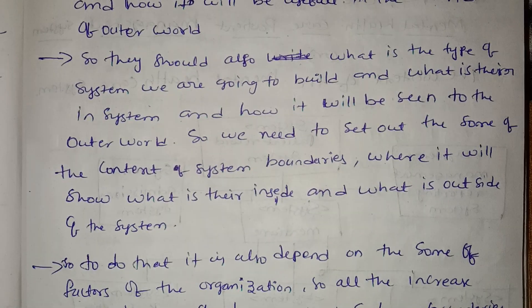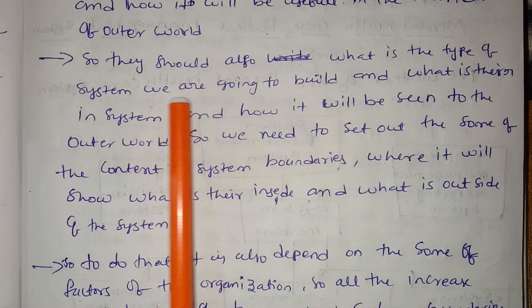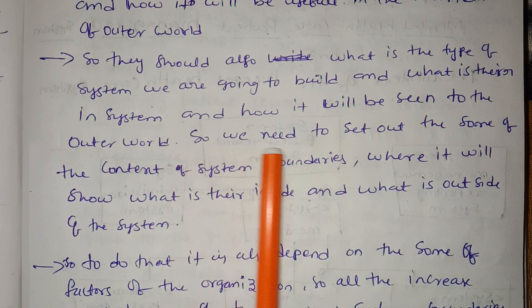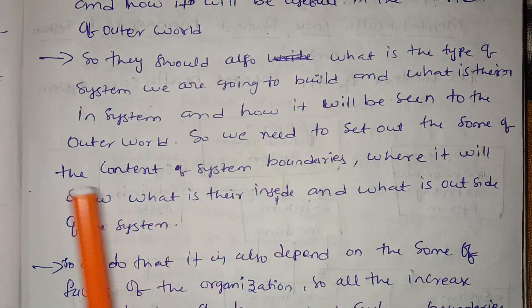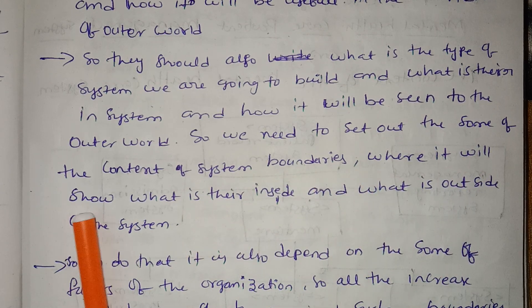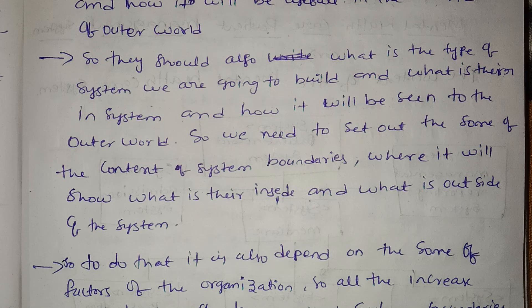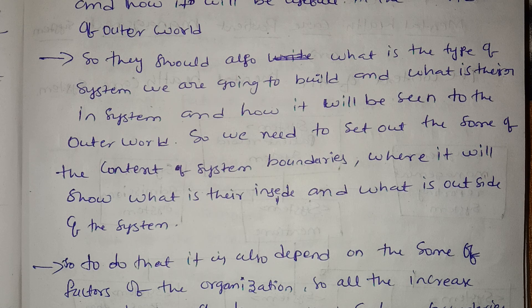We should know what type of system we are going to build, what is inside the system, and how it will be seen by the outer world. We need to set out the context of the system boundaries, showing what is inside and what is outside of the system.